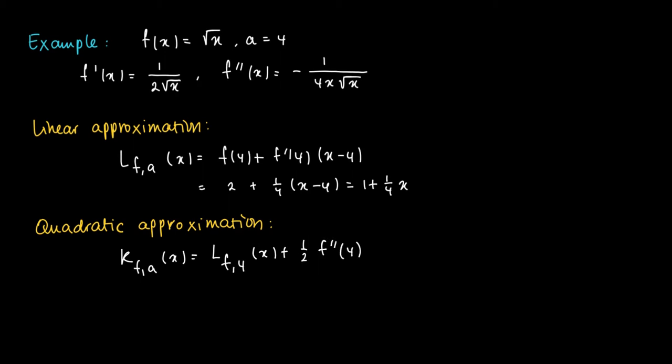The quadratic term is half times the second derivative at 4 times (x minus 4) squared. So we get 1 plus 1 over 4x minus 1 half times 1 over 4 times 4 times 2 times (x minus 4) squared.